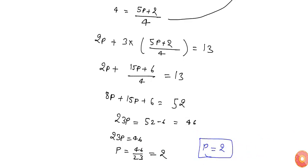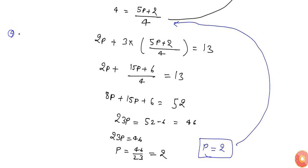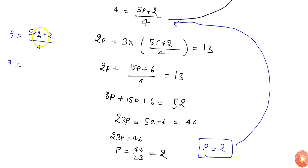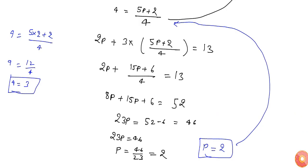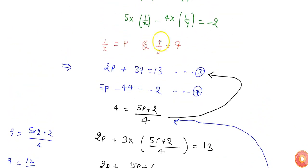From here I got the value of p, which is 2. If I put the value of p here, I can get the value of q. So q equals to (5 into 2 plus 2) divided by 4, which is (10 plus 2)/4 equals to 12/4, so q equals to 3. Now we have the value of both p and q.